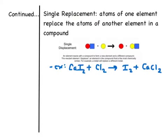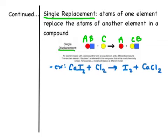The third type is single replacement, also called single displacement. This is where an element replaces or recombines with another compound to make a new element and a different compound. If compound AB reacts with element C, we get element A plus compound CB — a new element and a new compound from the recombination.